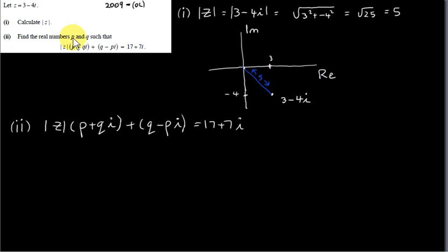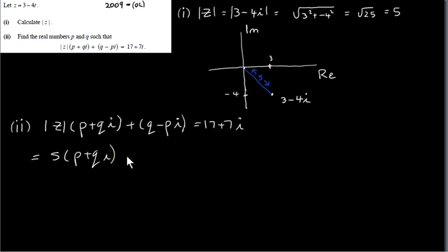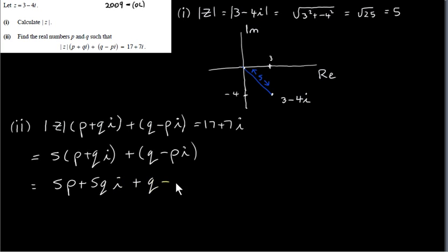In part 2, we have to find the real numbers p and q such that the modulus of z — I can call this mod z — multiplied by p plus qi, plus q minus pi, equals 17 plus 7i. What I will do is simplify the left hand side into a single complex number. We've got the modulus of z from part 1, it's 5. So this is going to be 5 times p plus qi, plus q minus pi. Multiplying 5 in gives 5p plus 5qi plus q minus pi.